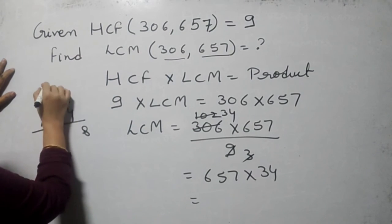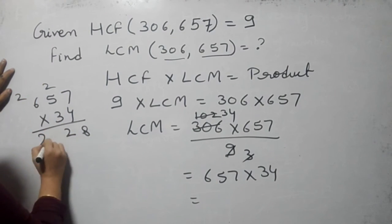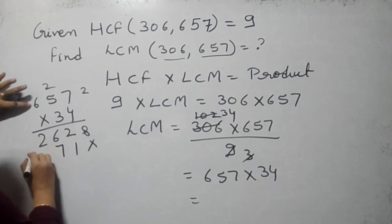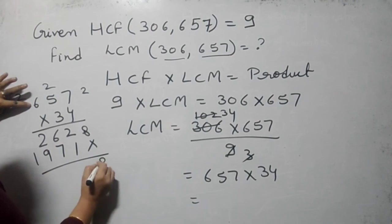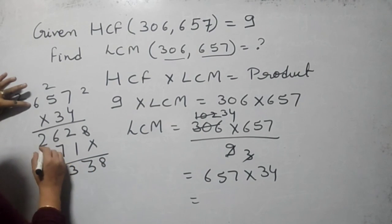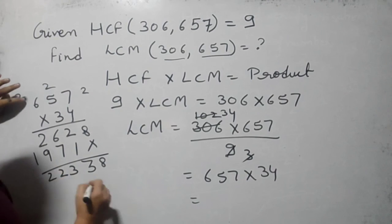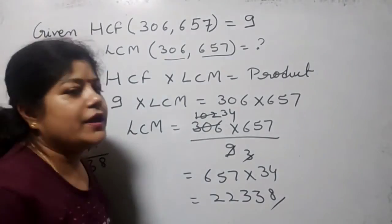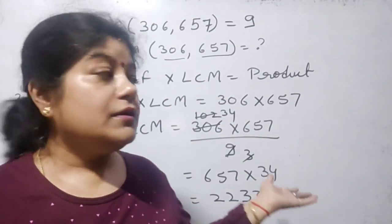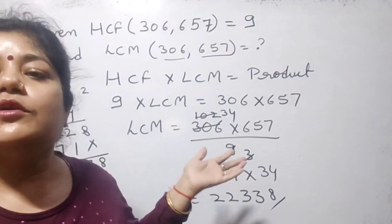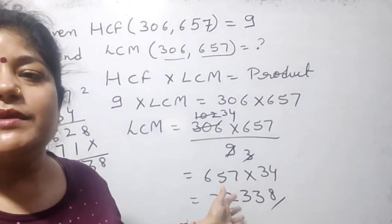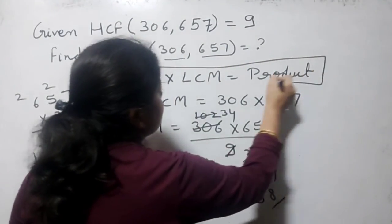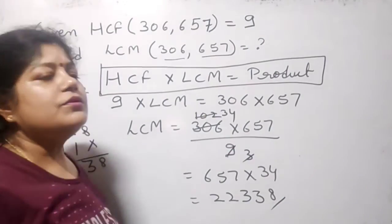Multiplying 657 into 34, we get LCM = 22338. So in this way, if any of the values — HCF, LCM, or the numbers — are not given or are missing, then we can easily find them using the formula HCF × LCM = product of the two numbers.